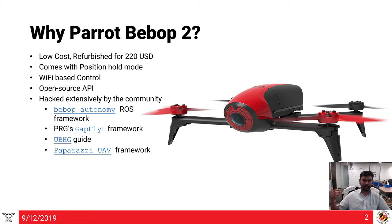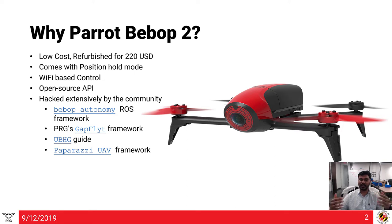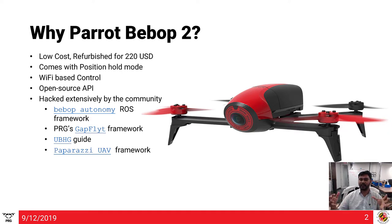There are several community-based APIs built on Parrot's original API. There's Bebop Autonomy for ROS, and our own in-house GapFlight framework which builds on top of Bebop Autonomy to provide higher-level commands for visual surveying. There's also the unofficial Bebop hacking guide for retuning gains and changing sensor parameters. And there's Paparazzi UAV, an open source framework developed by TU Delft — essentially a complete operating system written from the ground up, though it requires you to implement everything yourself.